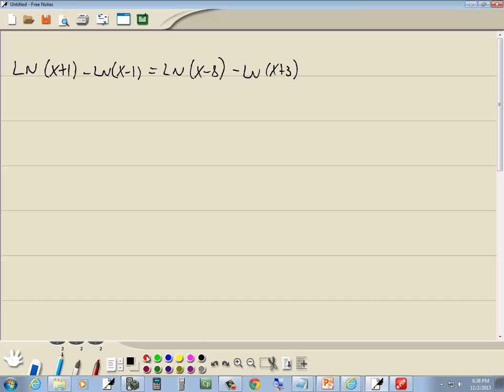Now notice everything has a log on it, so we're going to use our shortcut on this. We use properties of logs to get a single log on both sides. Well on both sides we have log of something minus log of something. Subtraction becomes division. x plus 1 over x minus 1 equals natural log of x minus 8 over x plus 3.